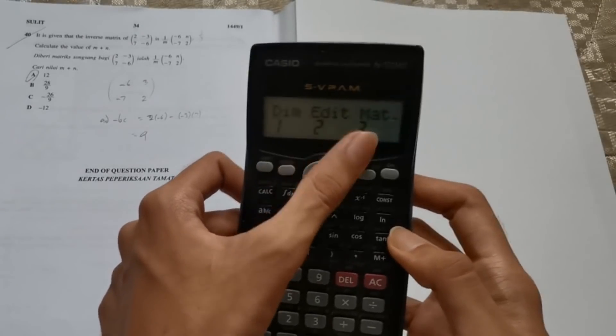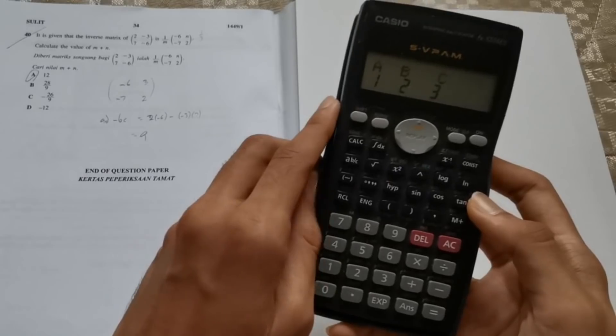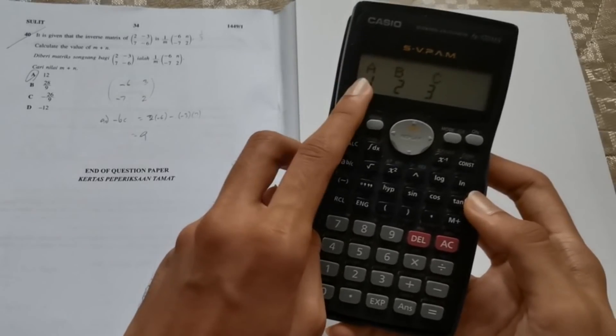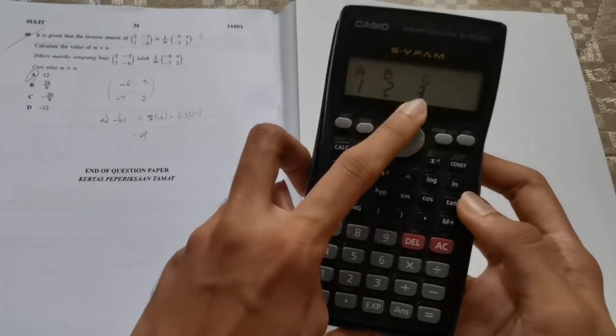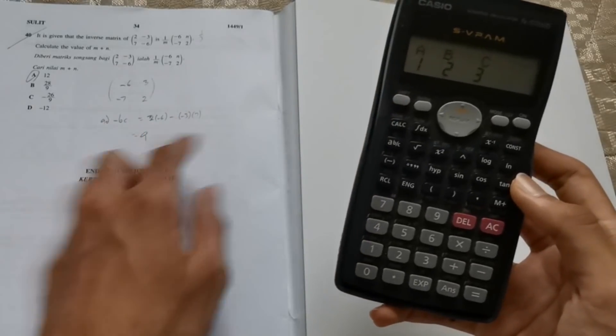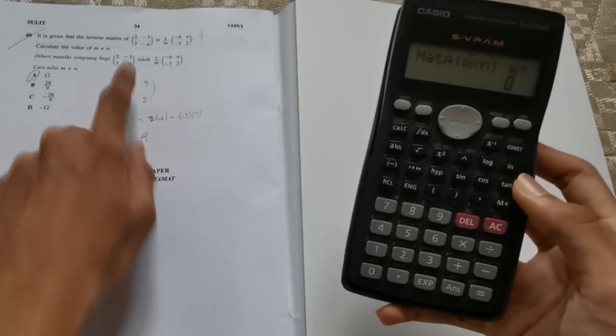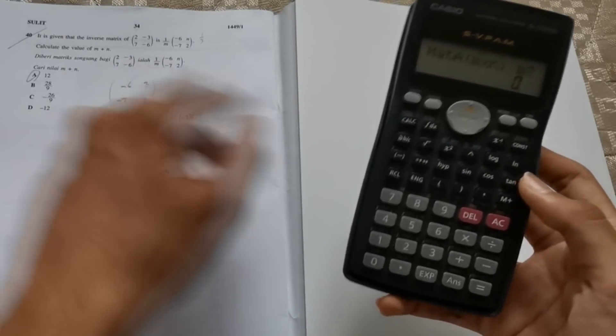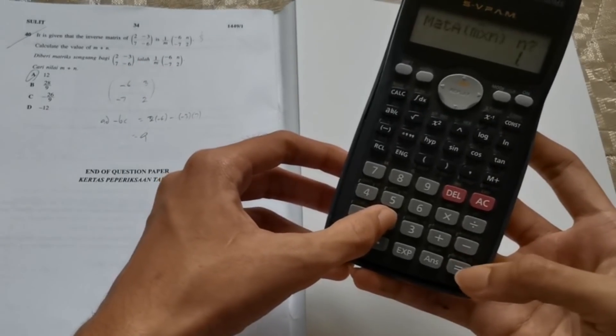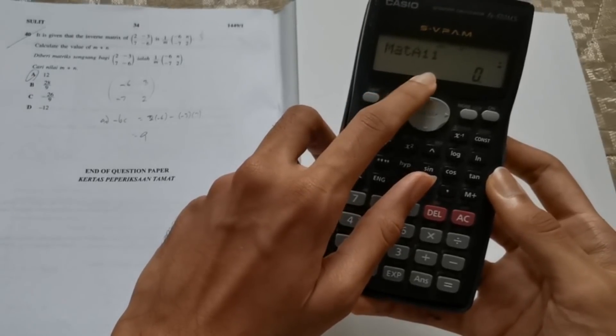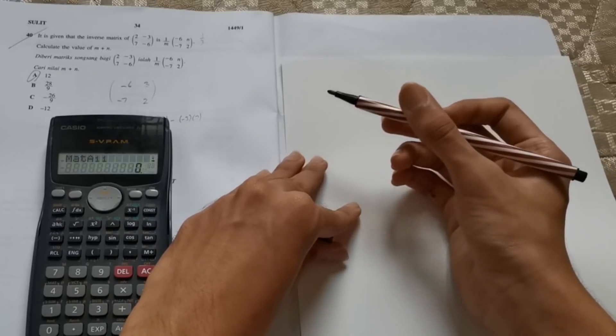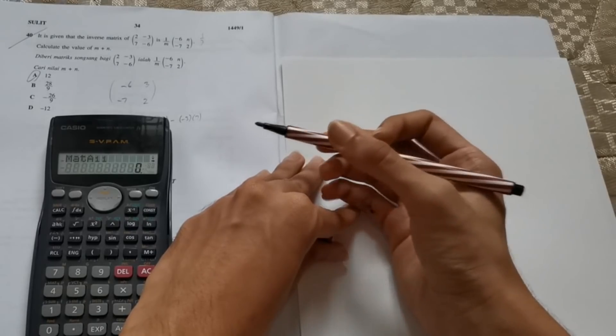Now you have to press shift and press 4. As you can see above 4, there's a MAT option. So you go there, you'll find dimension, edit, and matrix. First, you have to click 1 and you'll find ABC. What this means is you can store up to 3 matrices. We're only using 1 matrix in this question, so we just press 1. And now it's asking for the dimension of the matrix.